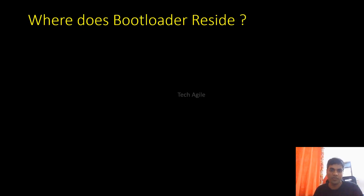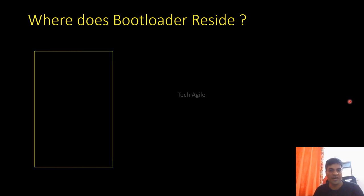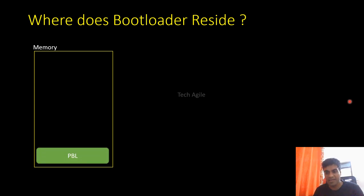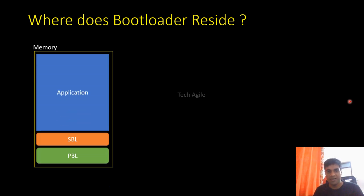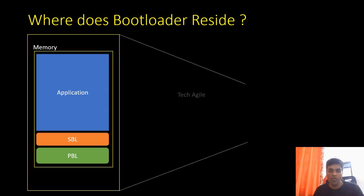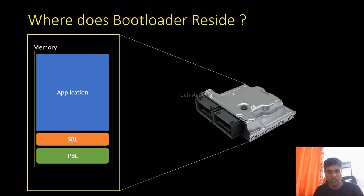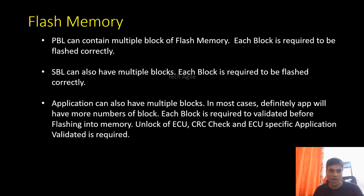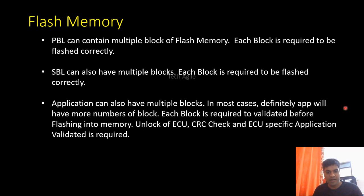Looking at a graphical view of memory layout: we have a PBL area, SBL area, and application area in the flash memory of the ECU. PBL can contain multiple blocks. SBL can also have multiple blocks. The application will have more blocks, and each block needs to be validated before flashing — using CRC checks and signature verification. Specific application conditions may also be required depending on the OEM.